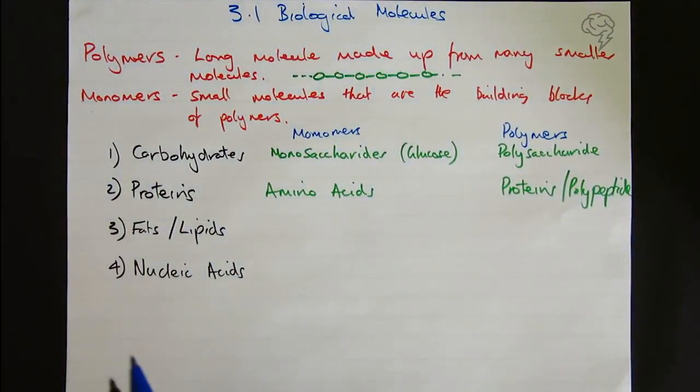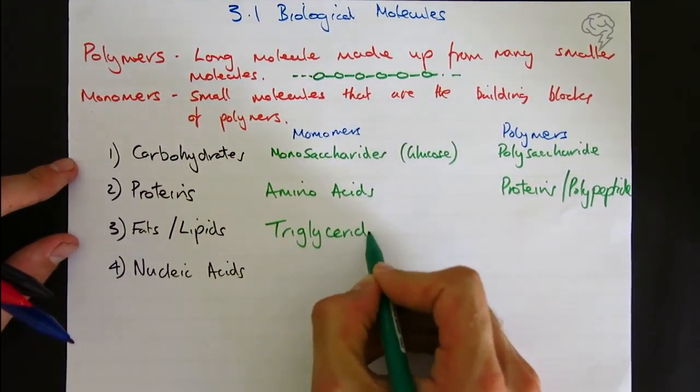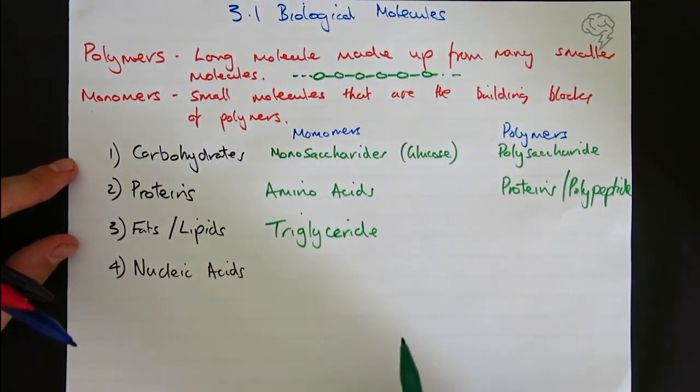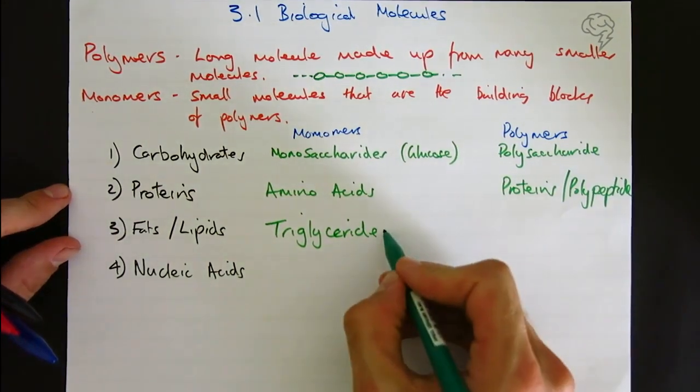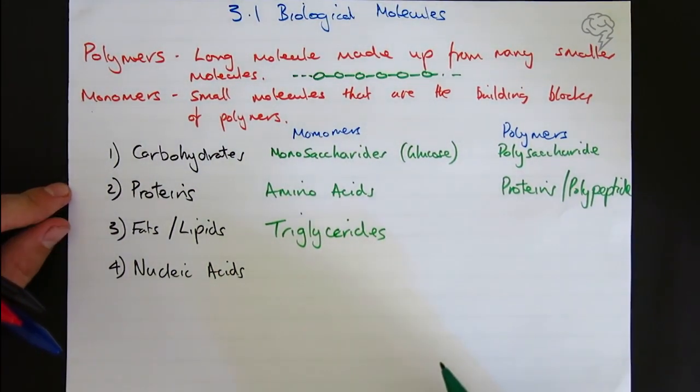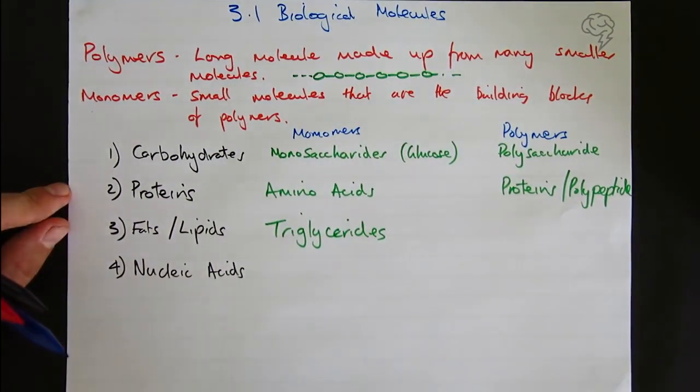For fats, the monomer we're going to use is a triglyceride. I'm going to leave the polymer blank. Phospholipids, which are very similar to triglycerides as you'll see soon, form plasma membranes, but I don't want to confuse things because that's not technically made from a fat directly.